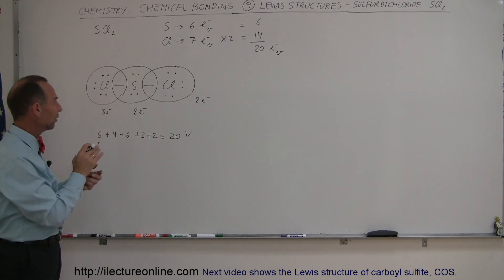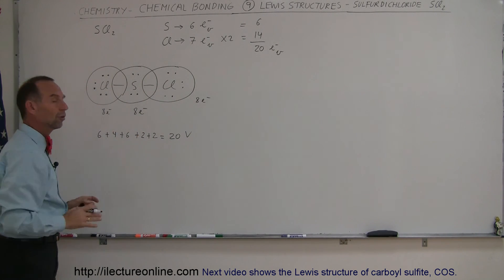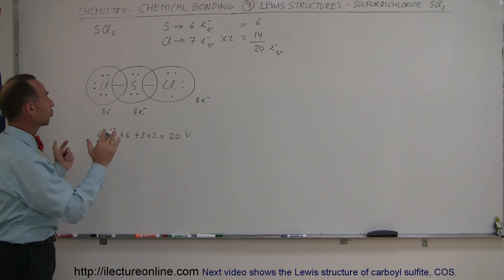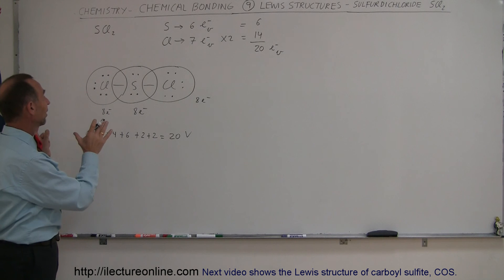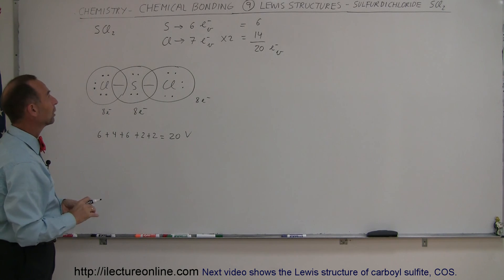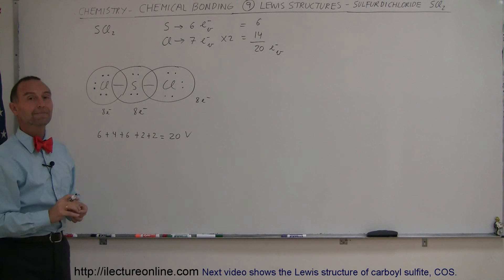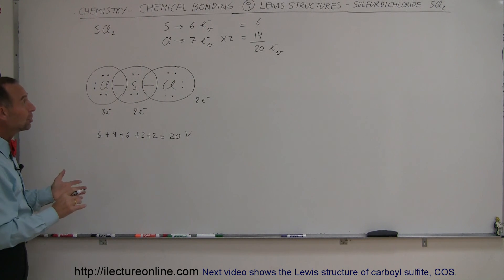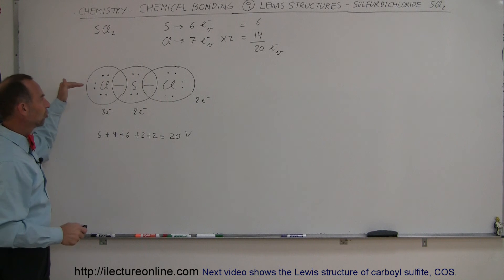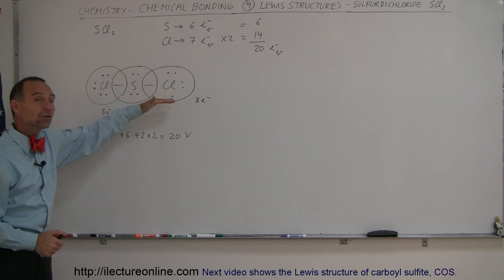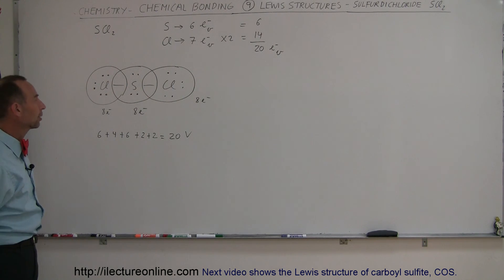We followed the octet rule, we have the correct number of valence electrons total in our structure, it looks like this will do it. That is then the Lewis structure of the sulfur chloride molecule. That's how we do that. It was a simple example, but notice how we follow the rules one by one to make sure we have the structure correct. Notice the perfect symmetry—I would assume that this would then become a linear molecule rather than a bent molecule.